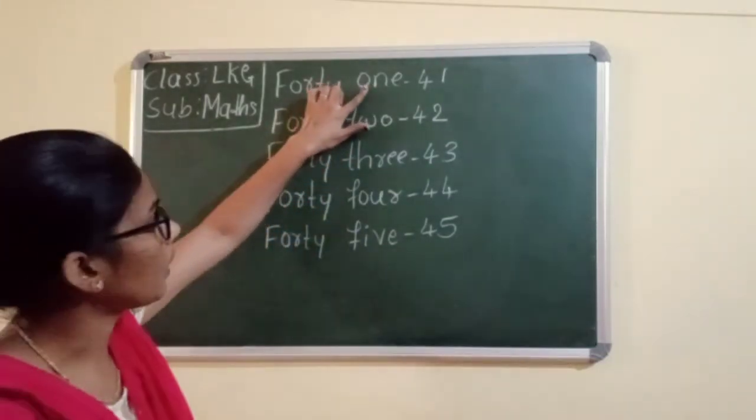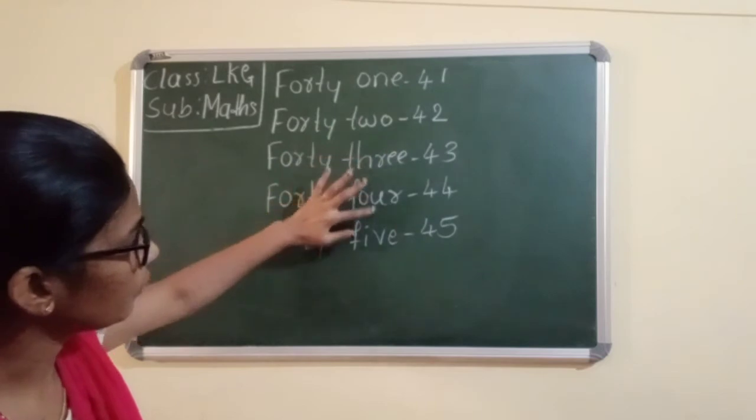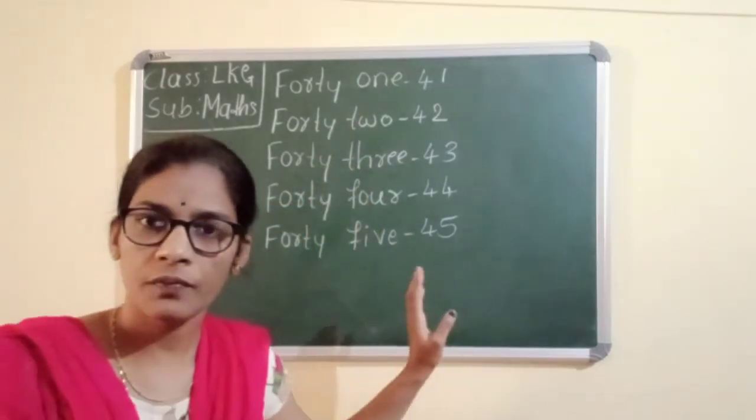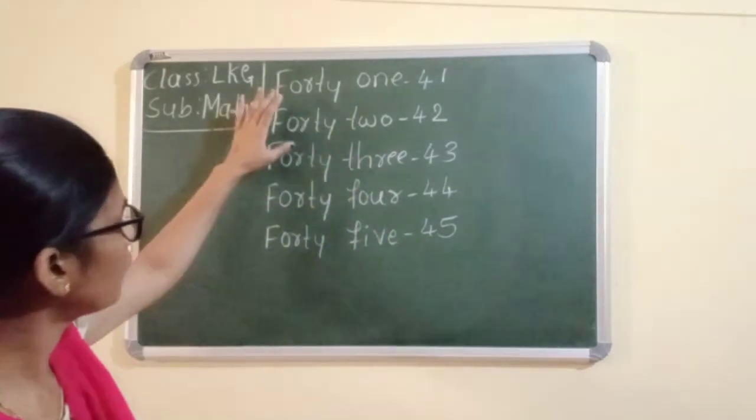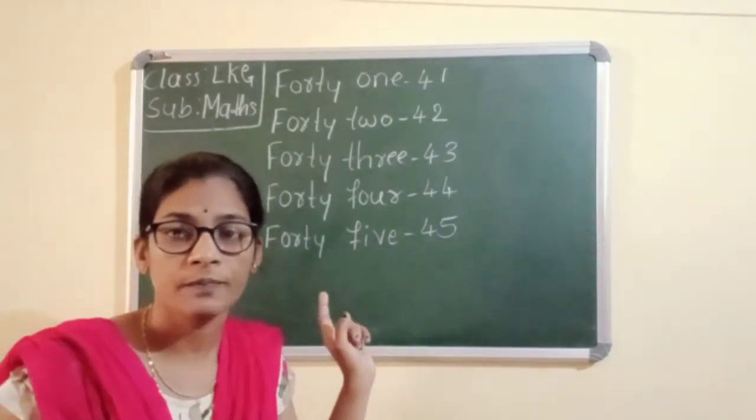Look at here, 1, 2, 3, 4, 5. This is the number of 1, 2, 3, and this one is 40, 40, 40. You should write, remember that, how to write. This is the trick.